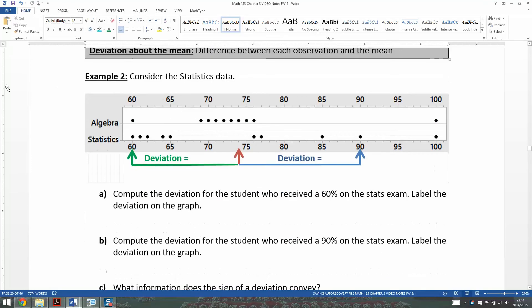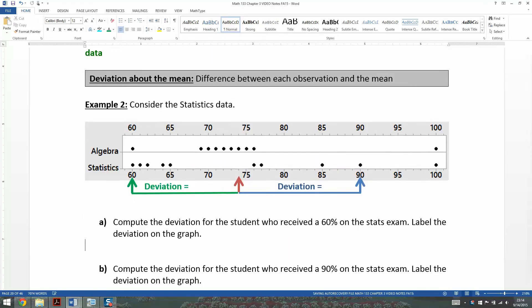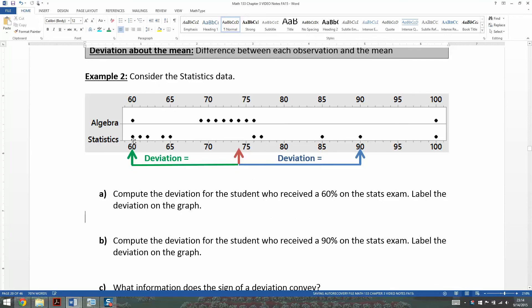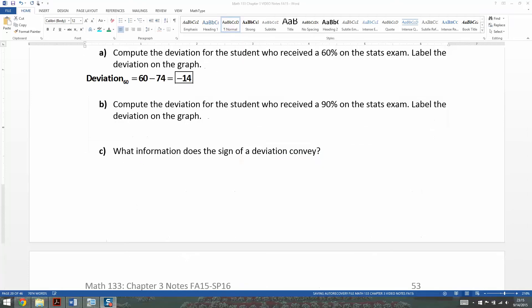So the first thing we need to think about is what is deviation? Deviation is the difference between the observation and the mean. Simple as that. So if I want the deviation for the person that scored 60, and I've labeled it right here in green for you, so that deviation would be 60 take away 74. There you have it, which is negative 14.